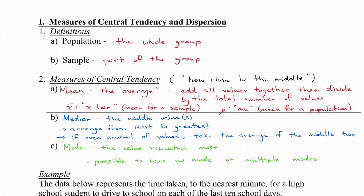The first thing we have is population. In statistics, population means the entire group — the whole group. You don't just pick a couple of them; you take the entire group. For a sample, this is part of the group. An example of a sample could be rather than taking a whole school and surveying them, you could just take a sample from each grade. Whereas a population would be taking the entire school and using that for your data.